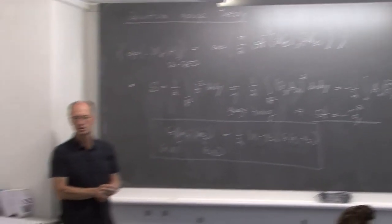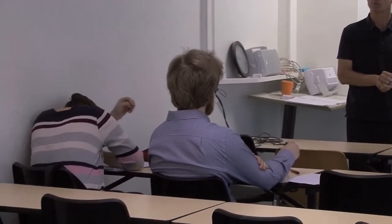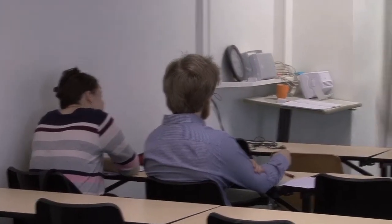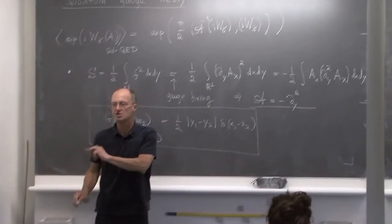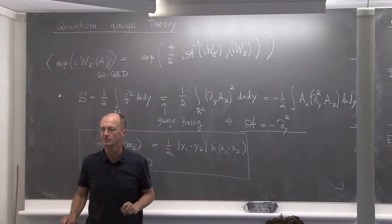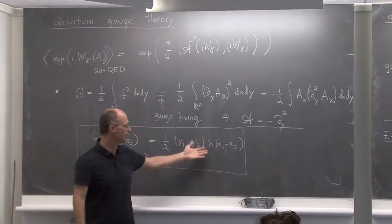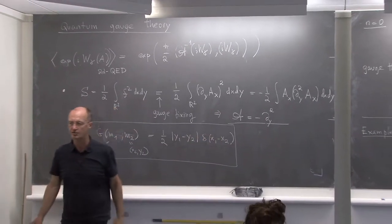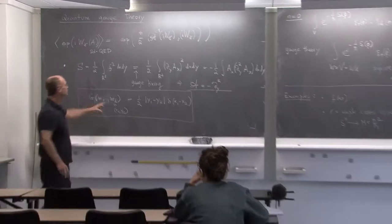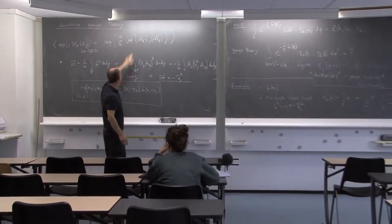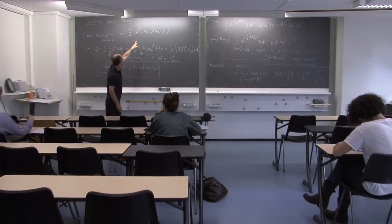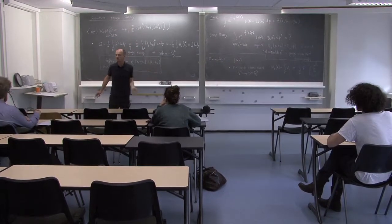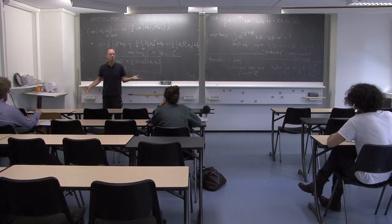Sure, no — of course it's a distribution, but we'll be integrating over it so it's not a problem. It's an acceptable inverse for our field theory. We now have this A^{-1} — the Green's function — and we can compute the quadratic form to see what it gives.